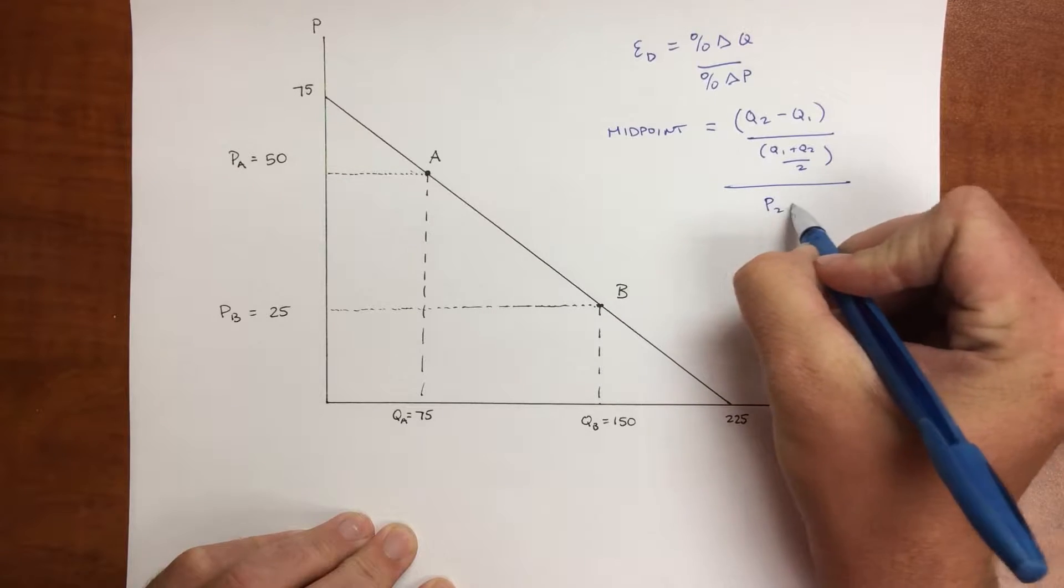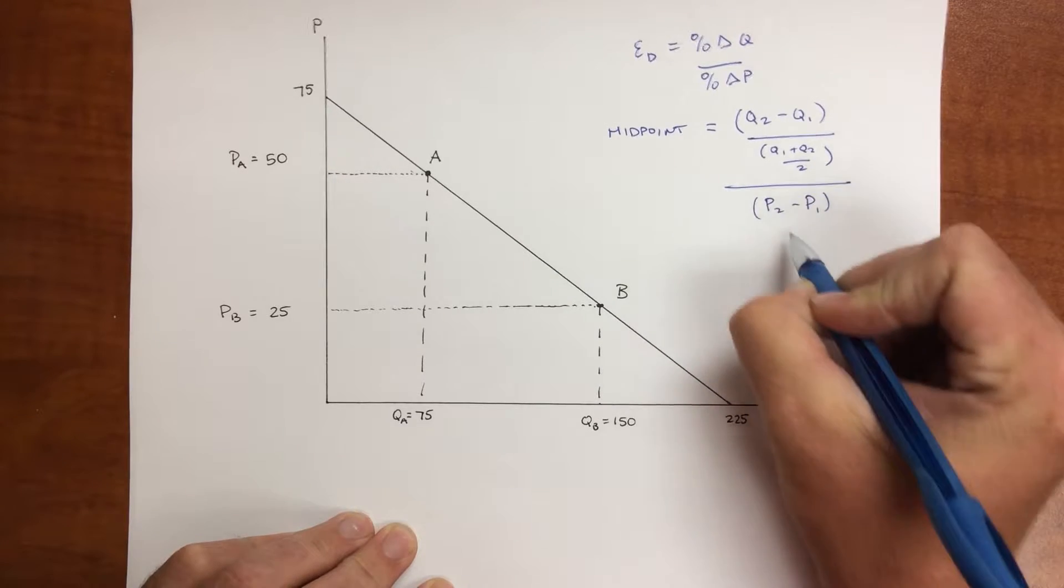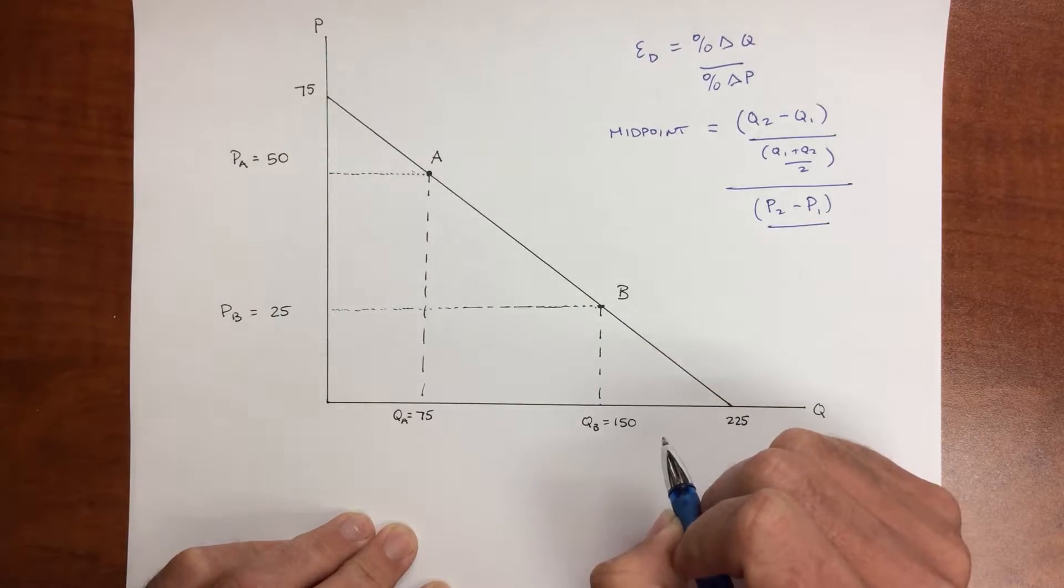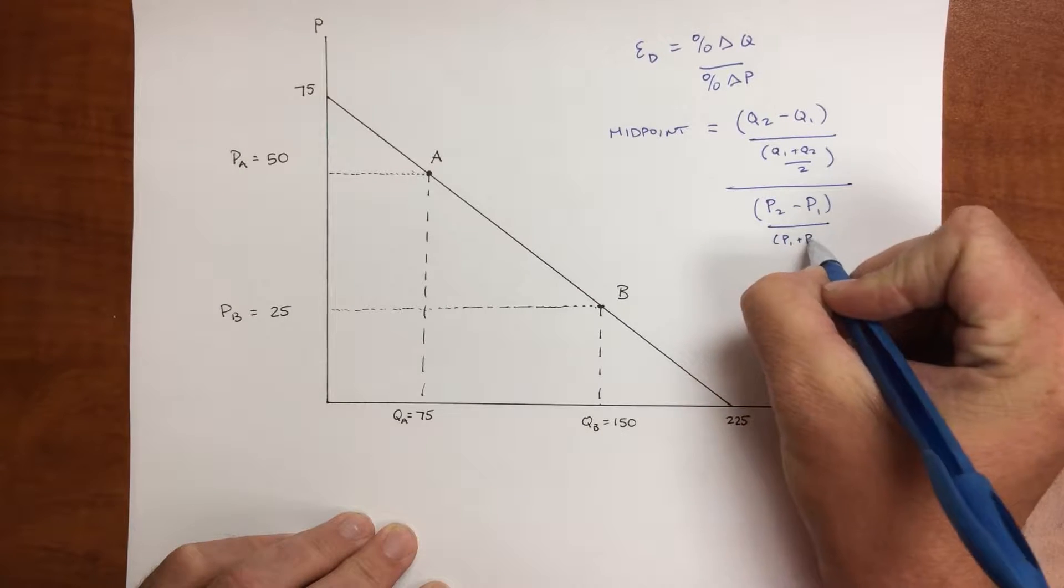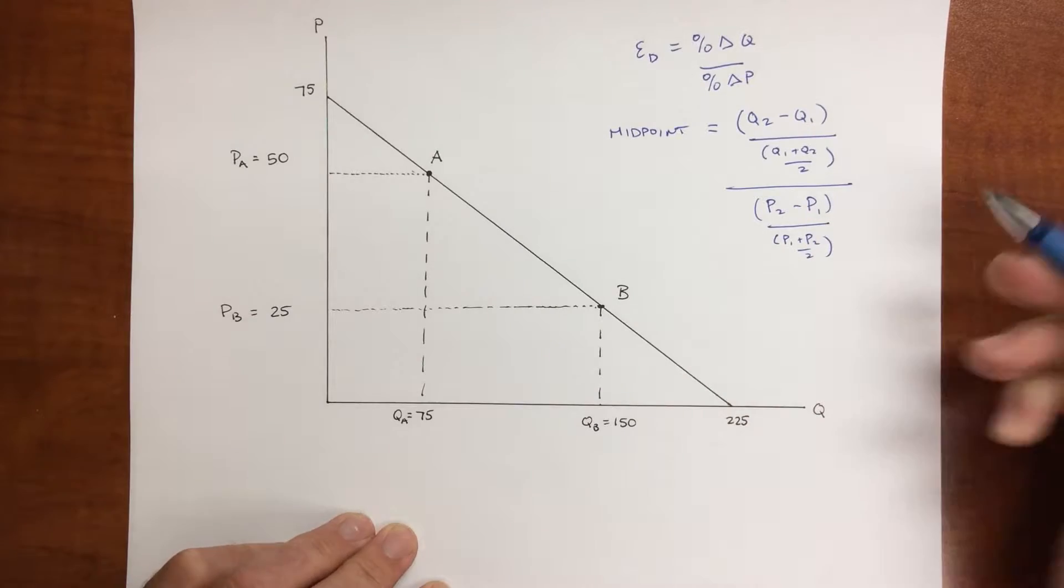And for price, we still have P2 minus P1, but as we divide it, we're not going to divide it by the initial price, but rather the midpoint of the two prices, which is P1 plus P2 divided by 2.